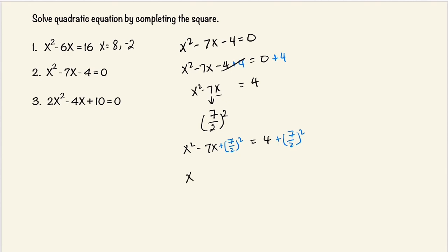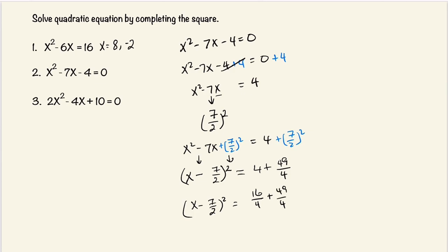This becomes x — we're going to bring down the negative sign that's right next to the coefficient of x and bring down the 7 over 2, and square this. And that's equal to 4 plus 7 over 2 squared, which equals 16 over 4 plus 49 over 4. We multiply the top and the bottom by 4 so that we get 16 over 4.